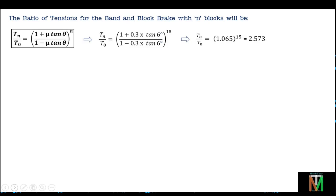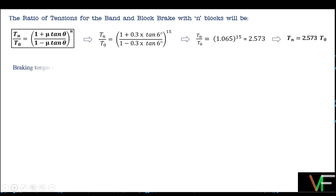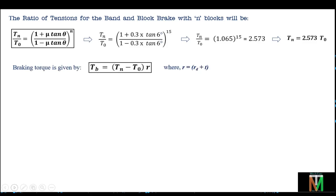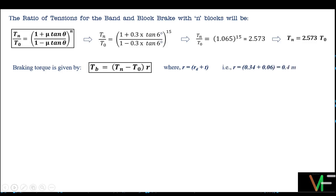This gives us Tn = 2.573 × T0. Further, breaking torque is given by Tb = (Tn - T0) × R, where R = Rd + T. R equals 0.34 (radius of drum) plus 0.06 (thickness of block), so R equals 0.4 meters.